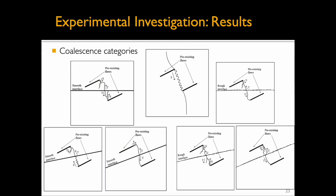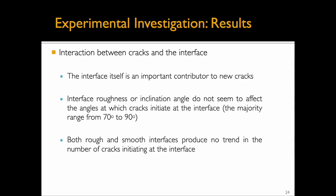The coalescence patterns observed in the right stepping geometry cases also indicate that changes in interface inclination and roughness impact coalescence patterns. Regarding the interaction between cracks and an interface, results show that an interface itself is an important contributor to new cracks. For all types of specimens tested, changes in interface roughness or inclination angle did not seem to affect the angles at which cracks initiated at the interface. For the majority of tested specimens, such angles ranged from 70 to 90 degrees. Additionally, interface roughness did not seem to affect the number of cracks initiating at the interface.